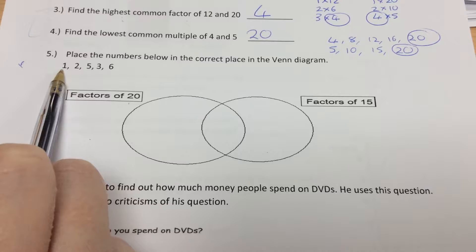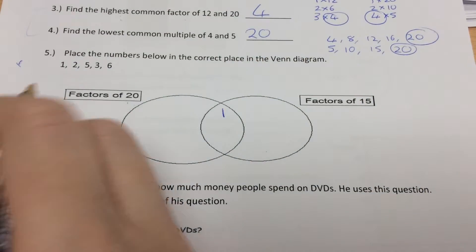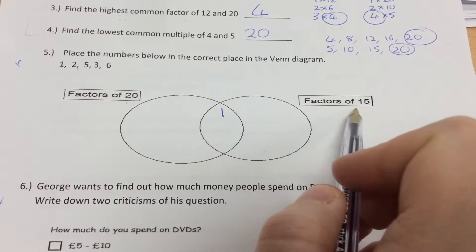So, 1 goes exactly into 20 and 15, so that goes in the middle. 2 goes exactly into 20, but it's not a factor of 15.